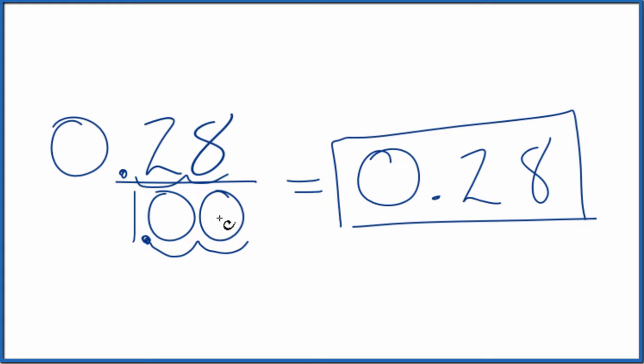So the fraction 28 hundredths equals the decimal 0.28. This is Dr. B, and thanks for watching.